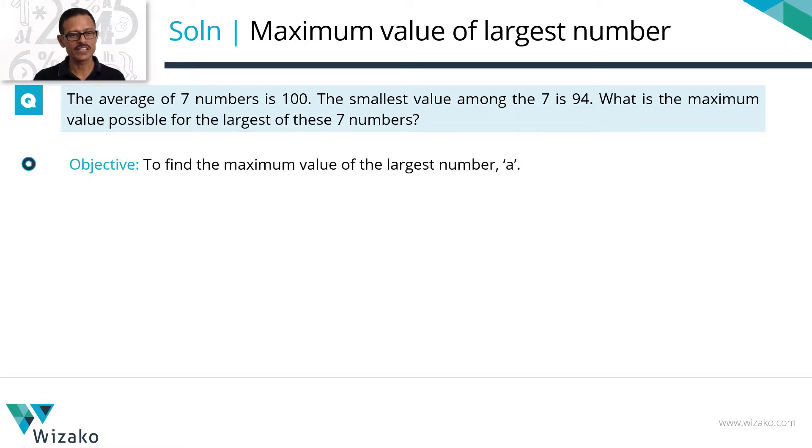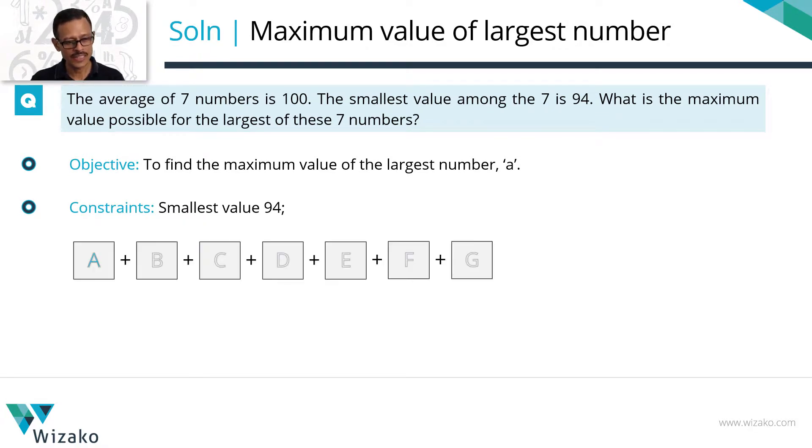What's our objective? Our objective is to find the maximum possible value of the largest number. We said the largest number in the 7 is A. So we need to maximize this. What's the constraint given to us? The constraint given is the smallest value among these 7 is a 94.